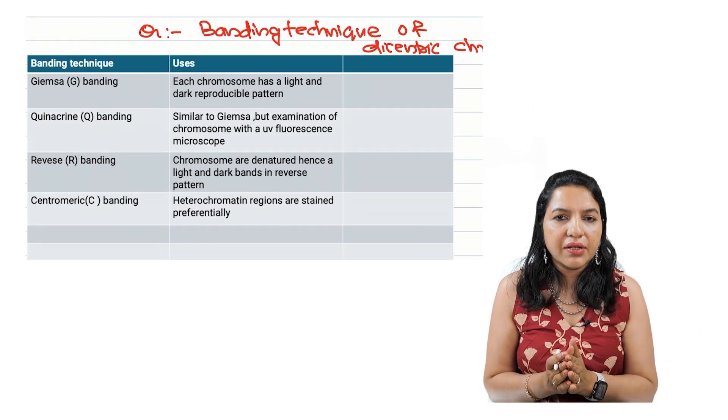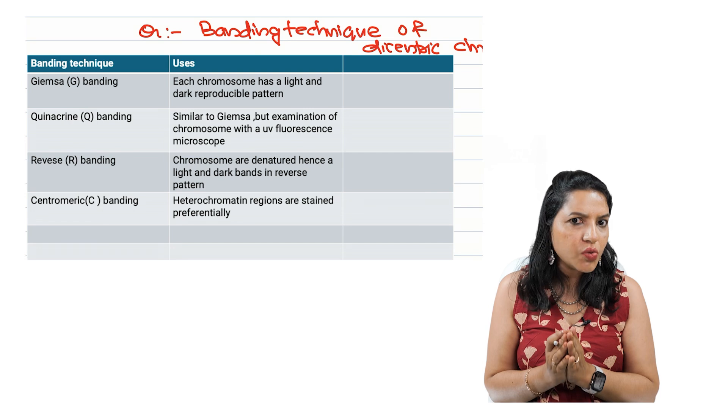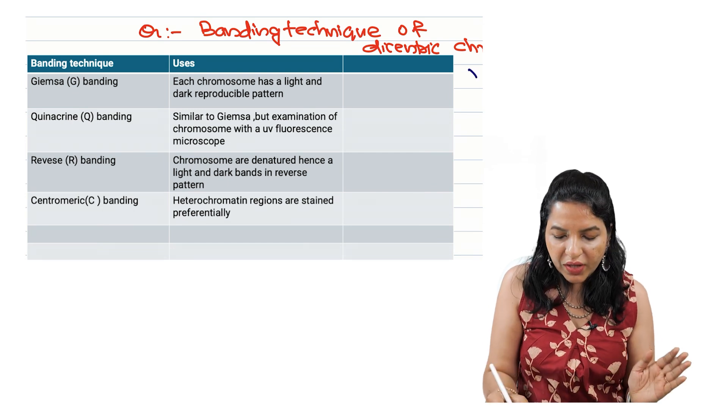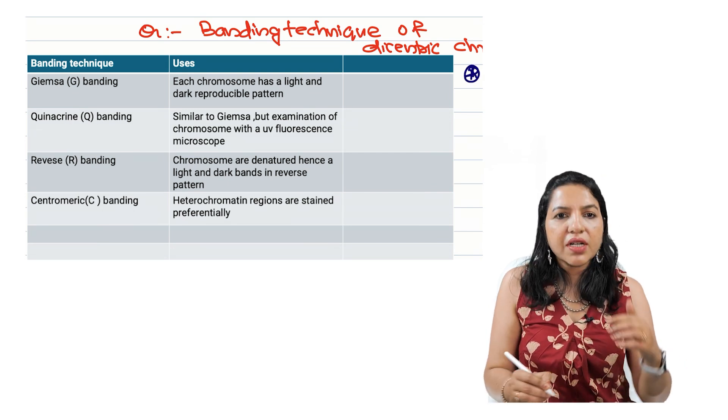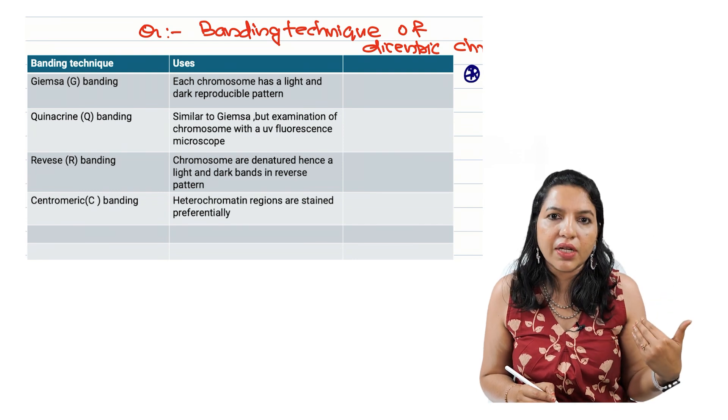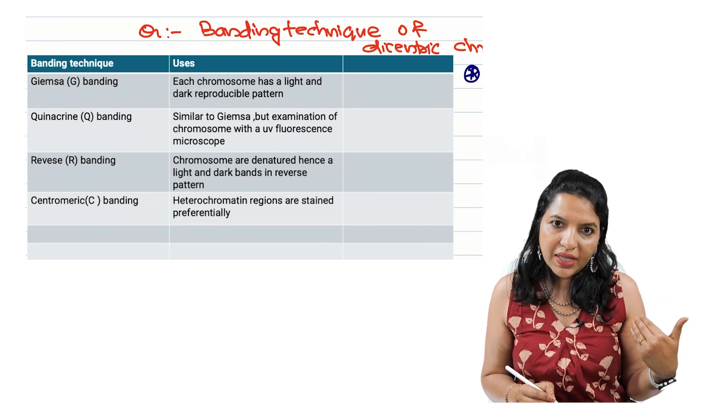Then a question that was asked in one of the exams is which is the banding technique used for a dicentric chromosome? So which are the different stains and different techniques that we can use under this karyotyping?